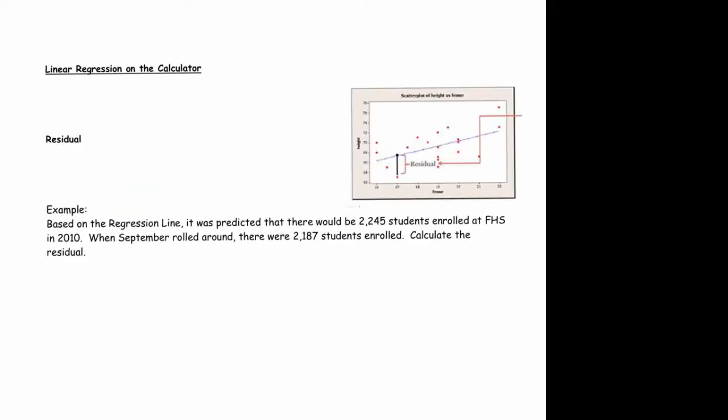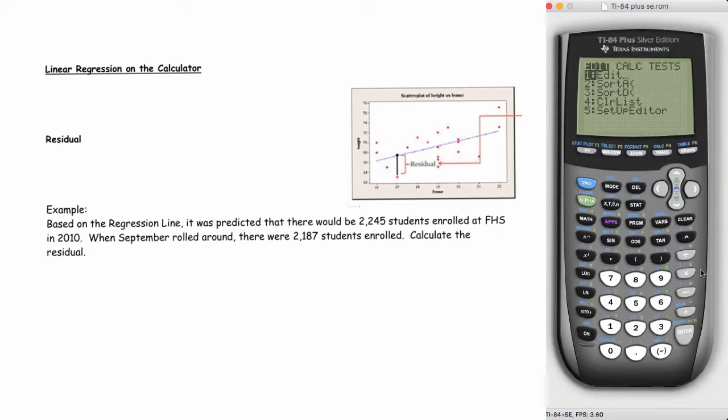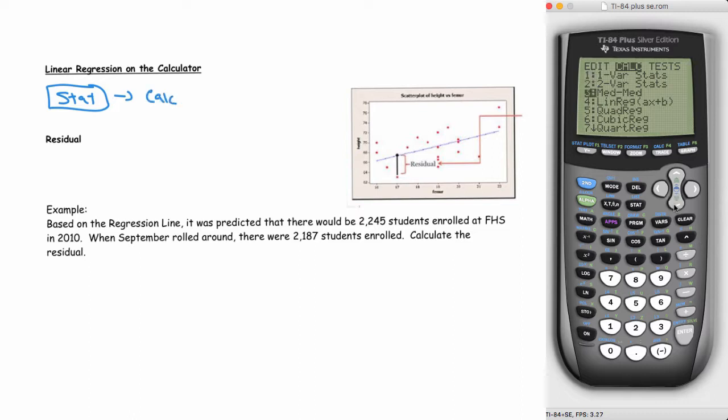As we've seen, we can compute the correlation coefficient, and in doing that we also get the linear regression equation. Hopefully the data is still in your calculator. Go to stats, over to edit, and make sure you've got these numbers in L1 and L2. Hit stat, then calculate, and go down to linear regression.